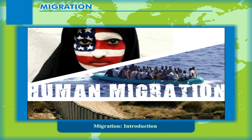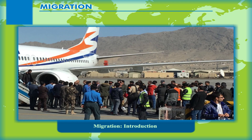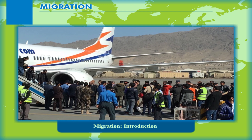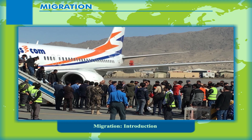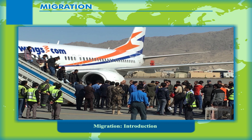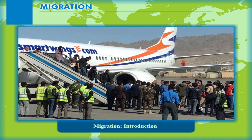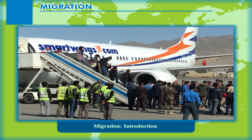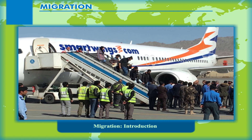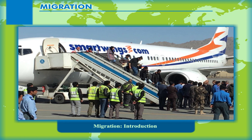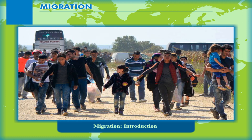Introduction: Human migration is the movement by people from one place to another with the intentions of settling permanently in the new location. Migration has played an important role in history. It is associated with settlement, economic use of the land, development of productive forces, education and the mixing of races, languages and peoples.